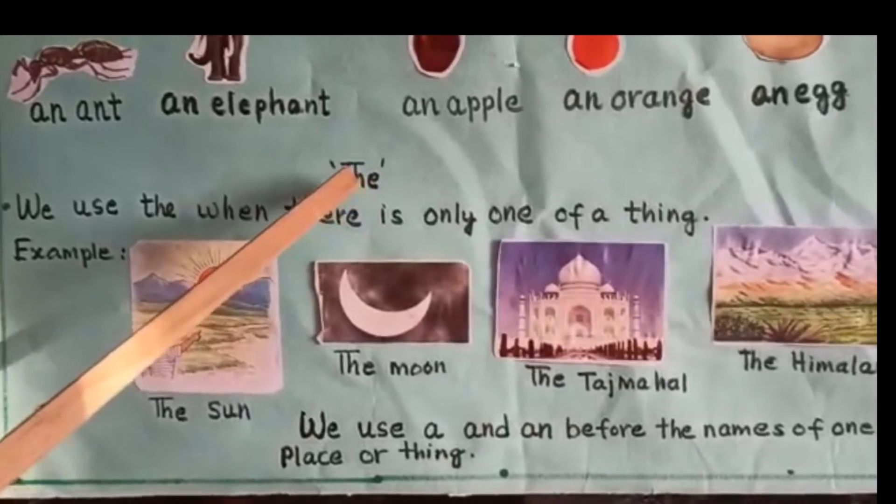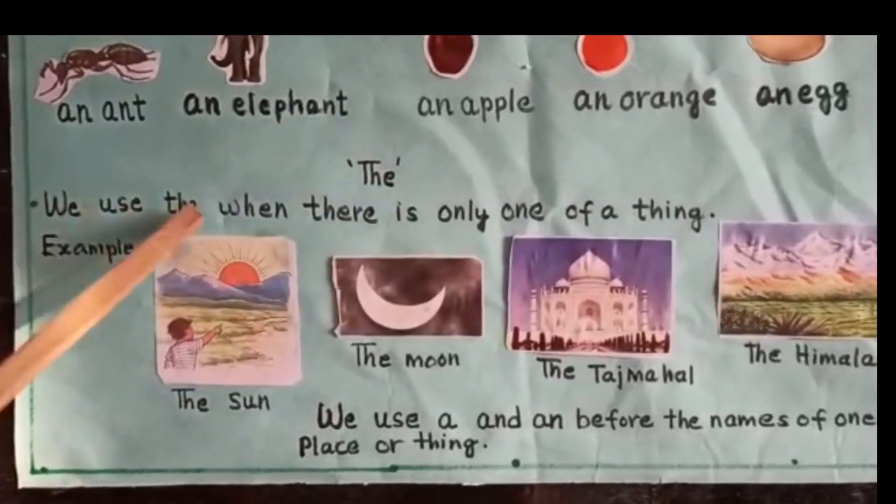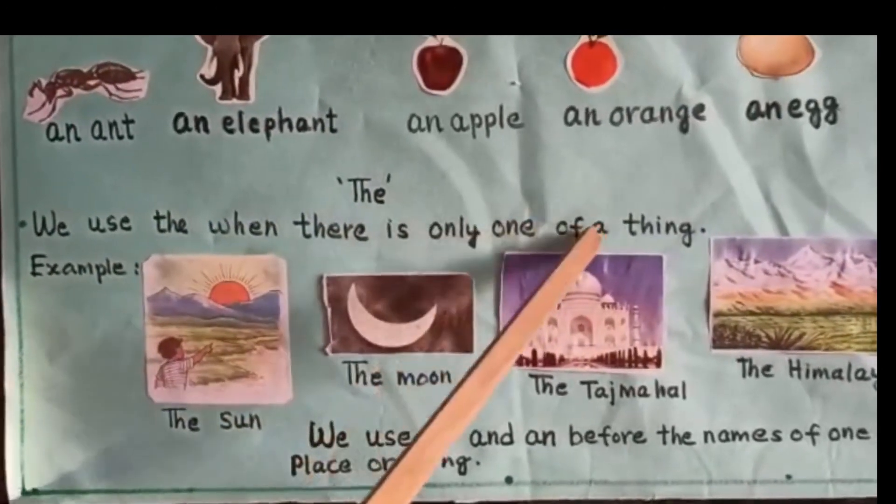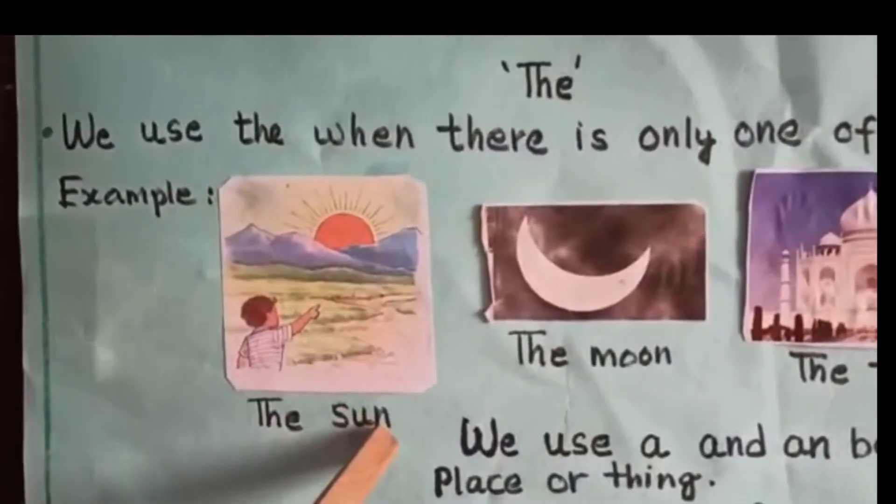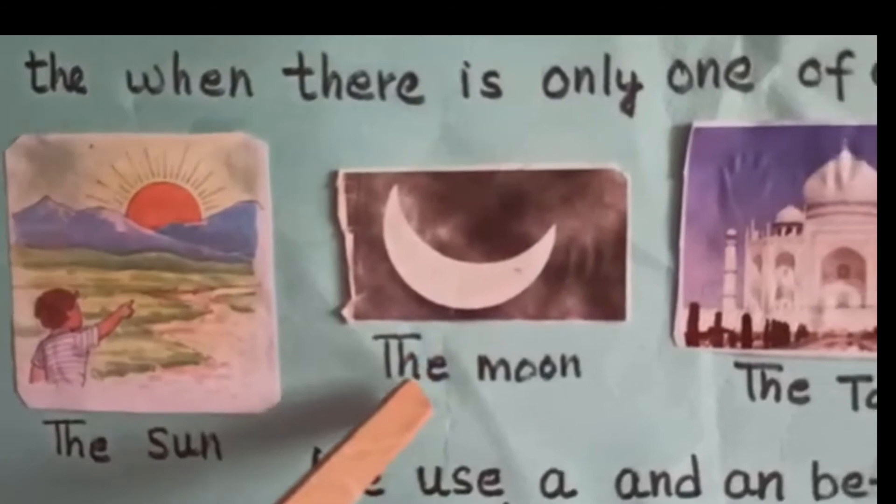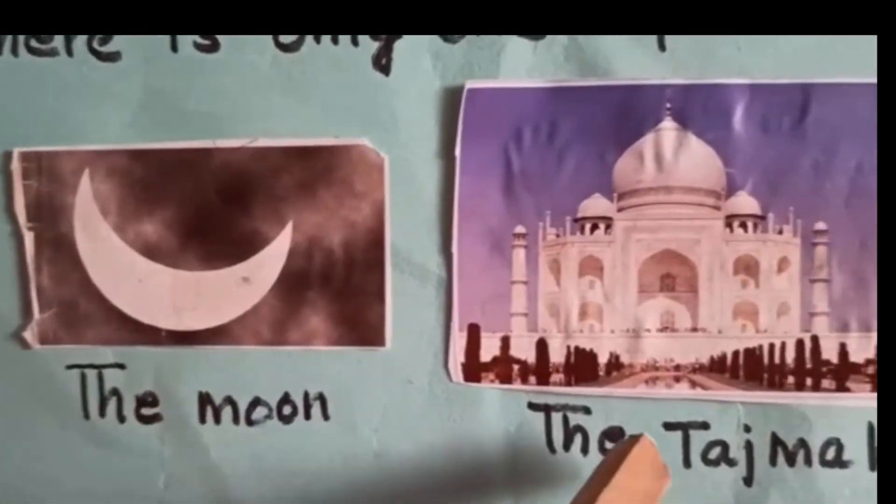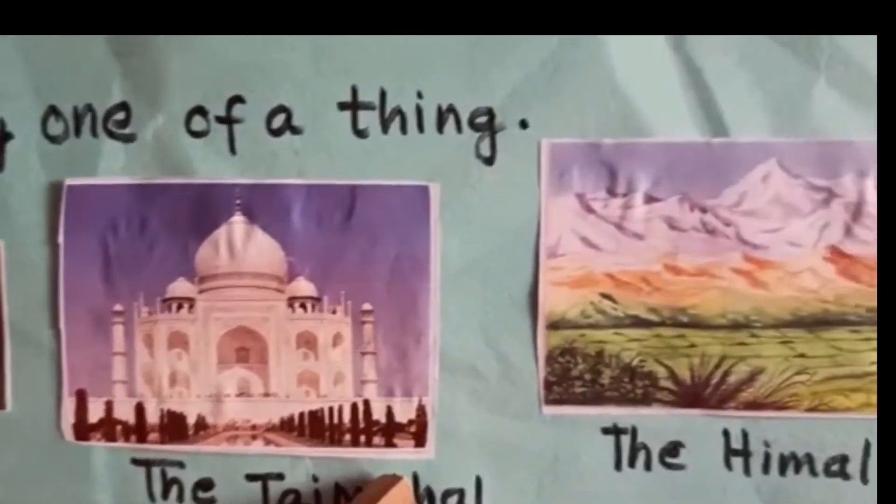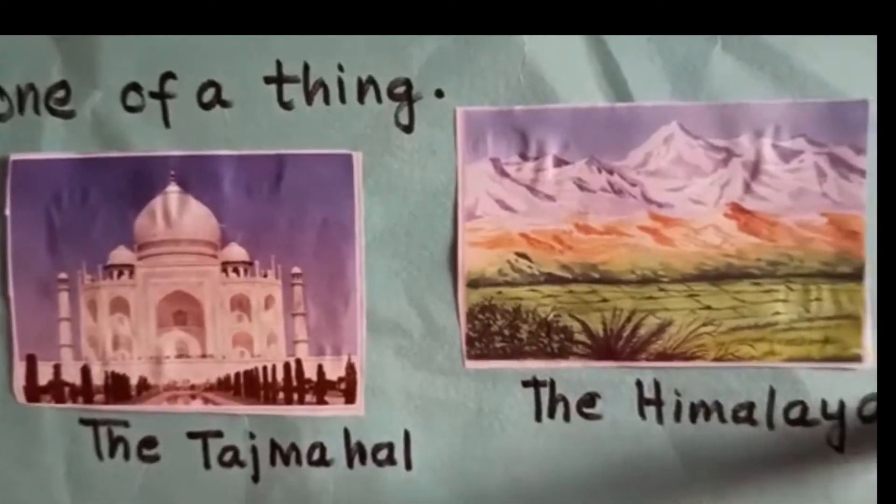Now, how to use the. We use the when there is only one of a thing. For example, the sun, because there is only one sun. The moon, because there is only one moon. The Taj Mahal. There is only one Taj Mahal.